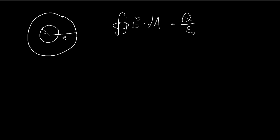For the spherical shell, you can already see that along the spherical shell the electric field is going to be constant, because of the symmetrical nature of the setup. There is no reason why the electric field should be stronger or weaker at any other point, so the electric field is constant along the surface of the spherical shell. And for its direction, it should point perpendicular to the surface, because there is no preference for it to lean in any other direction — again, because of the symmetry.